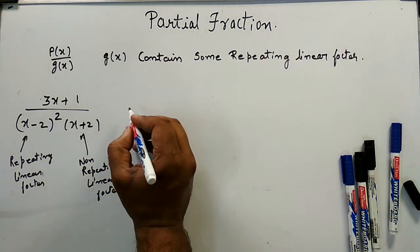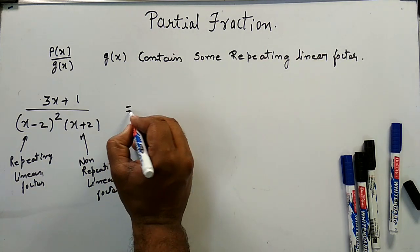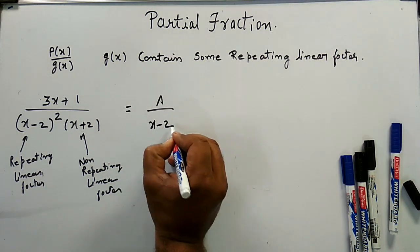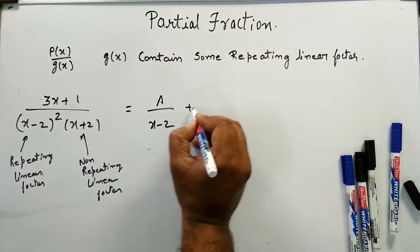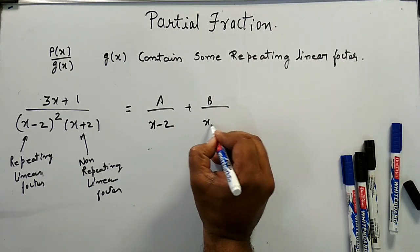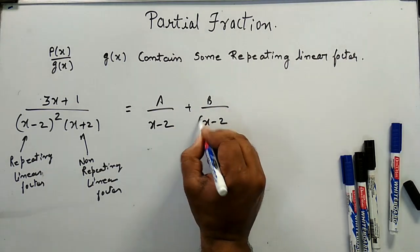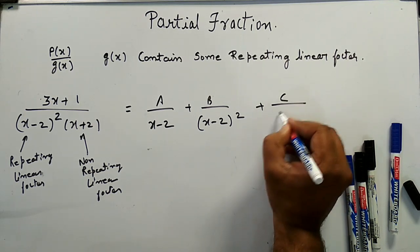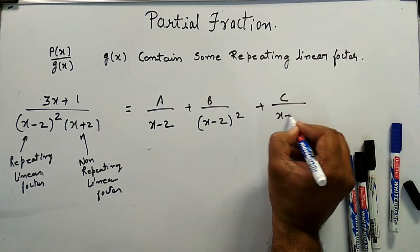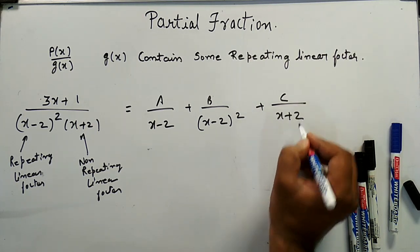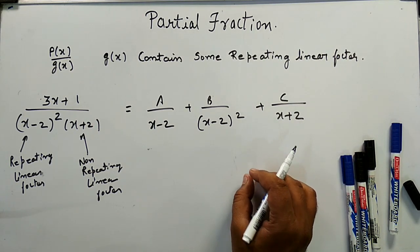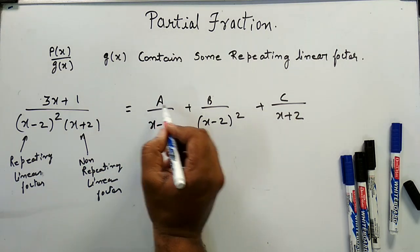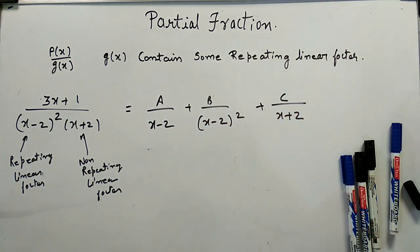The partial fraction form of this will look like: A/(x - 2) + B/(x - 2)² + C/(x + 2). Now we need only to find out the values of A, B, and C.